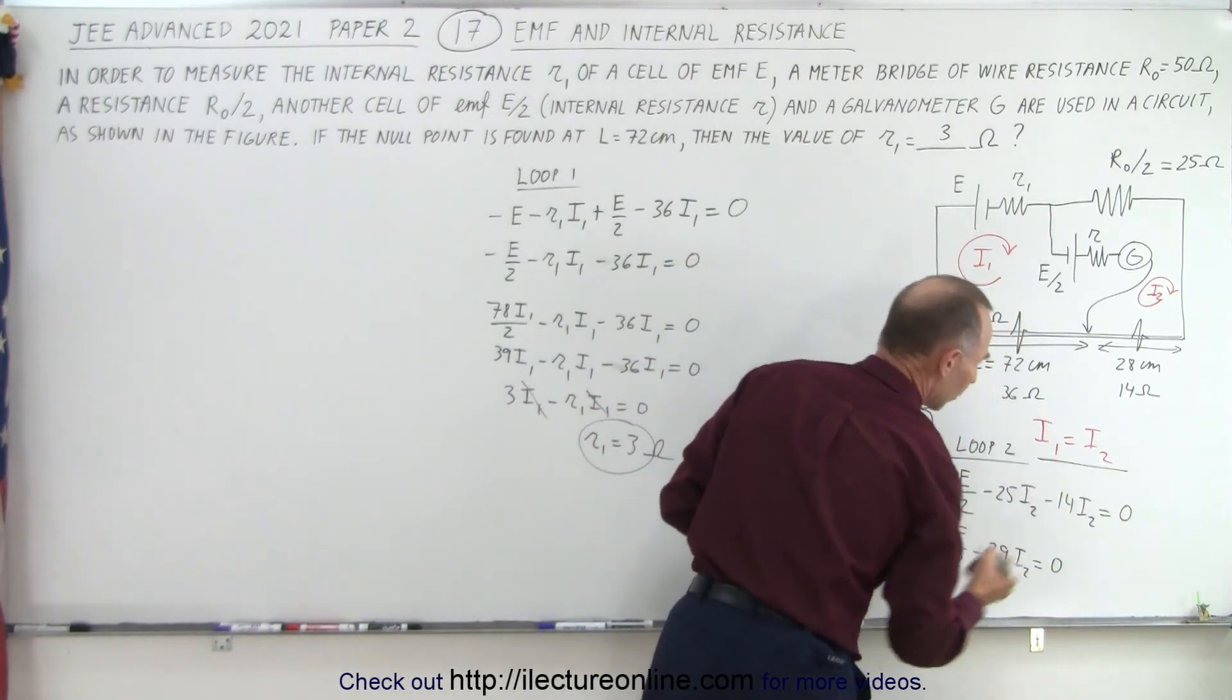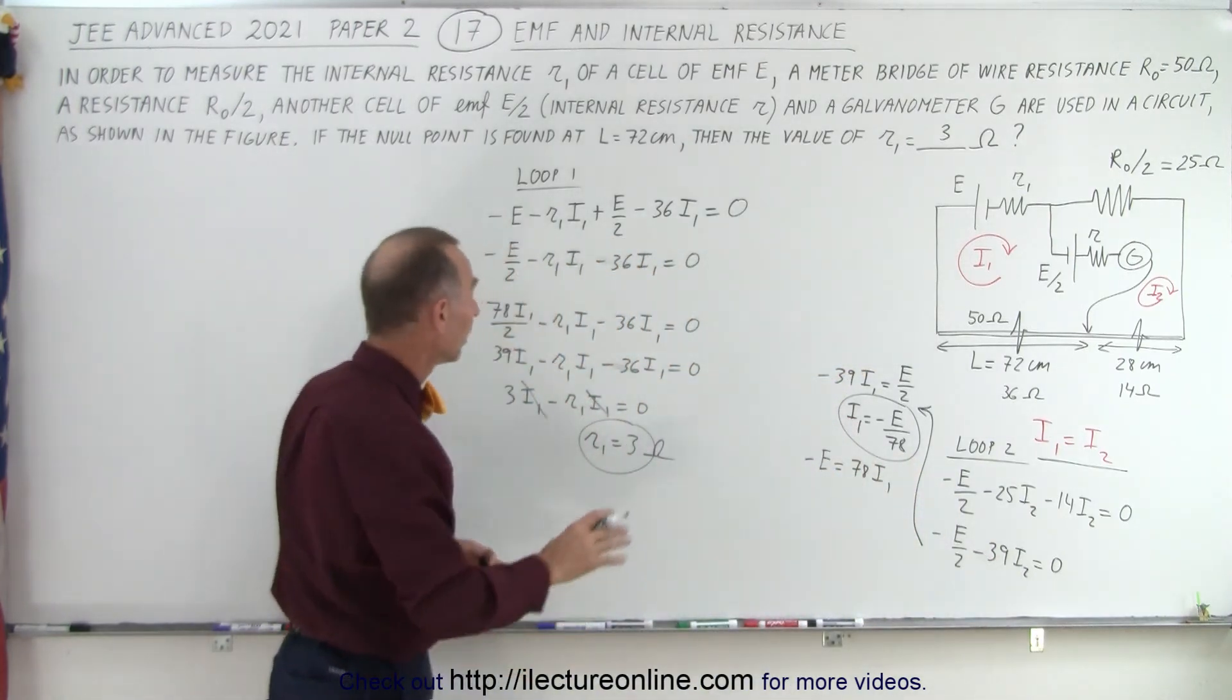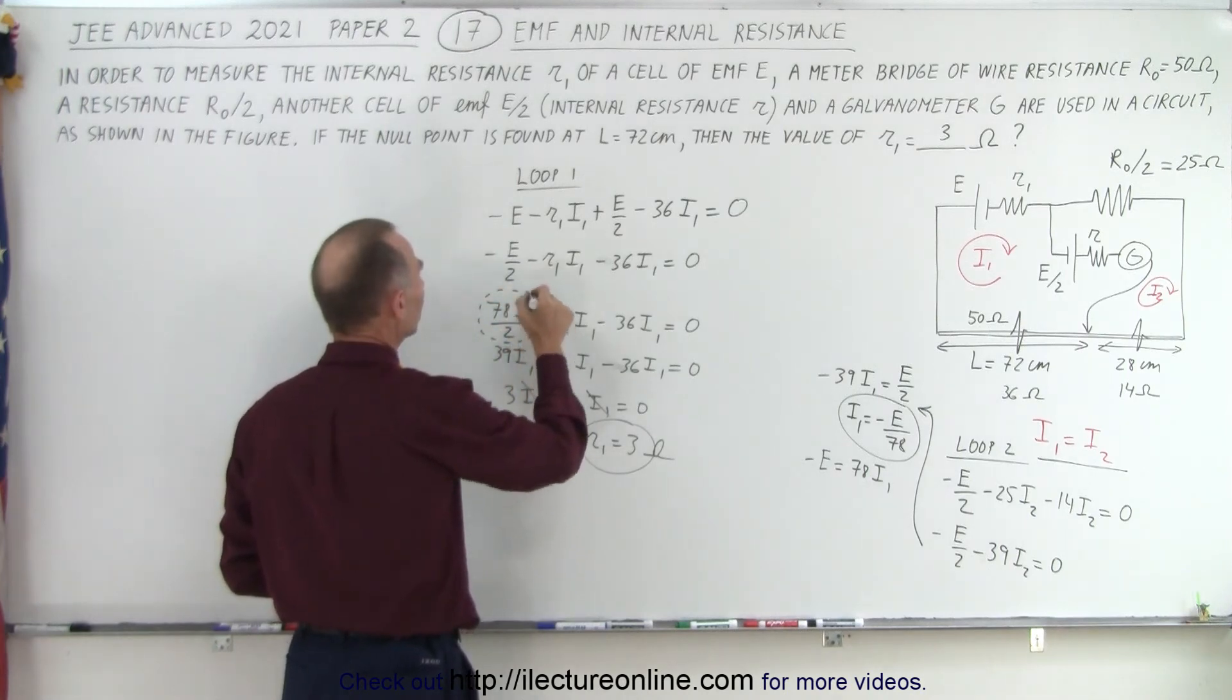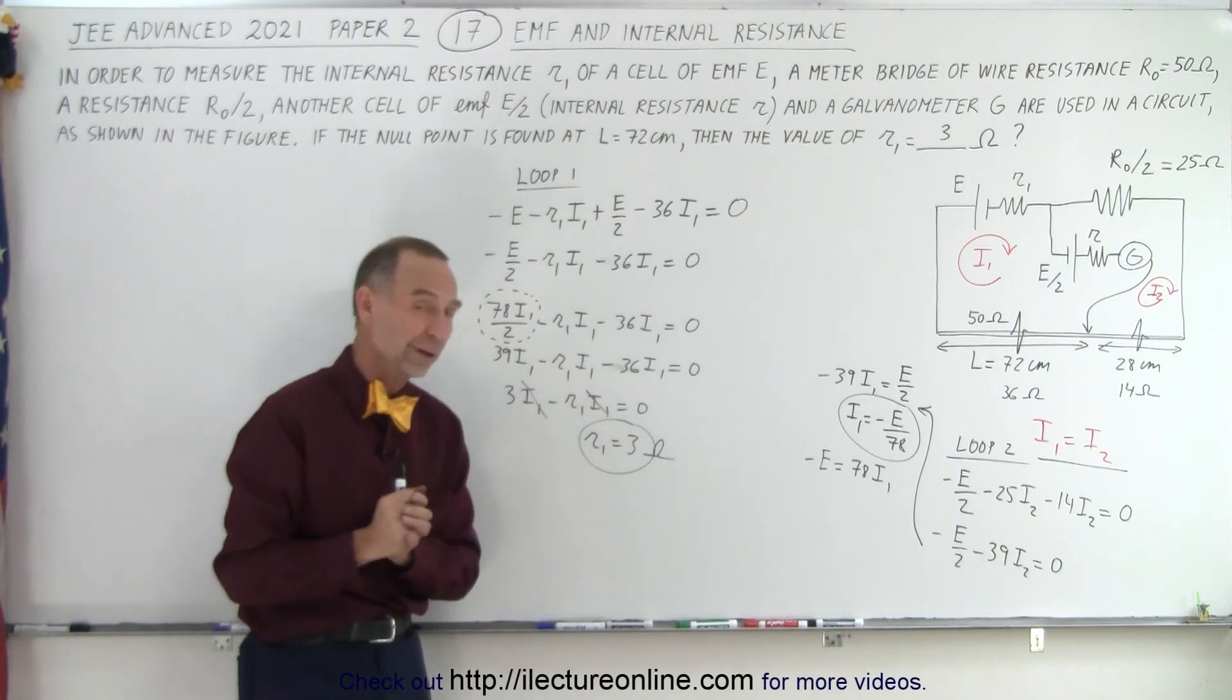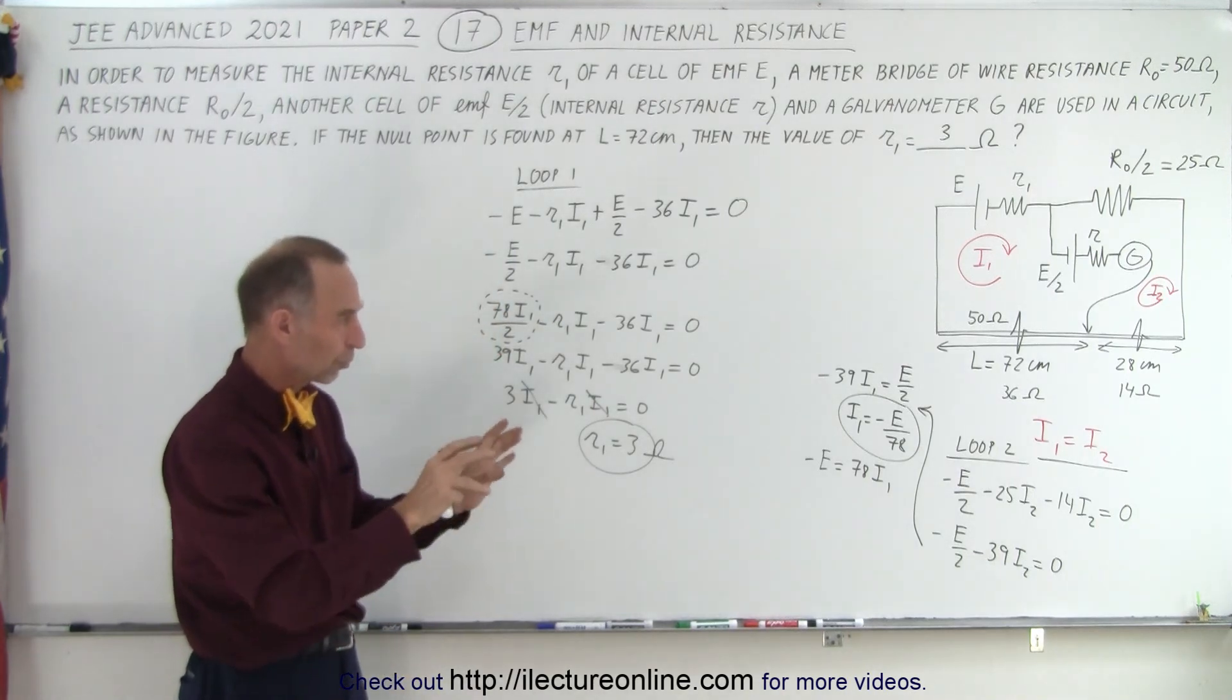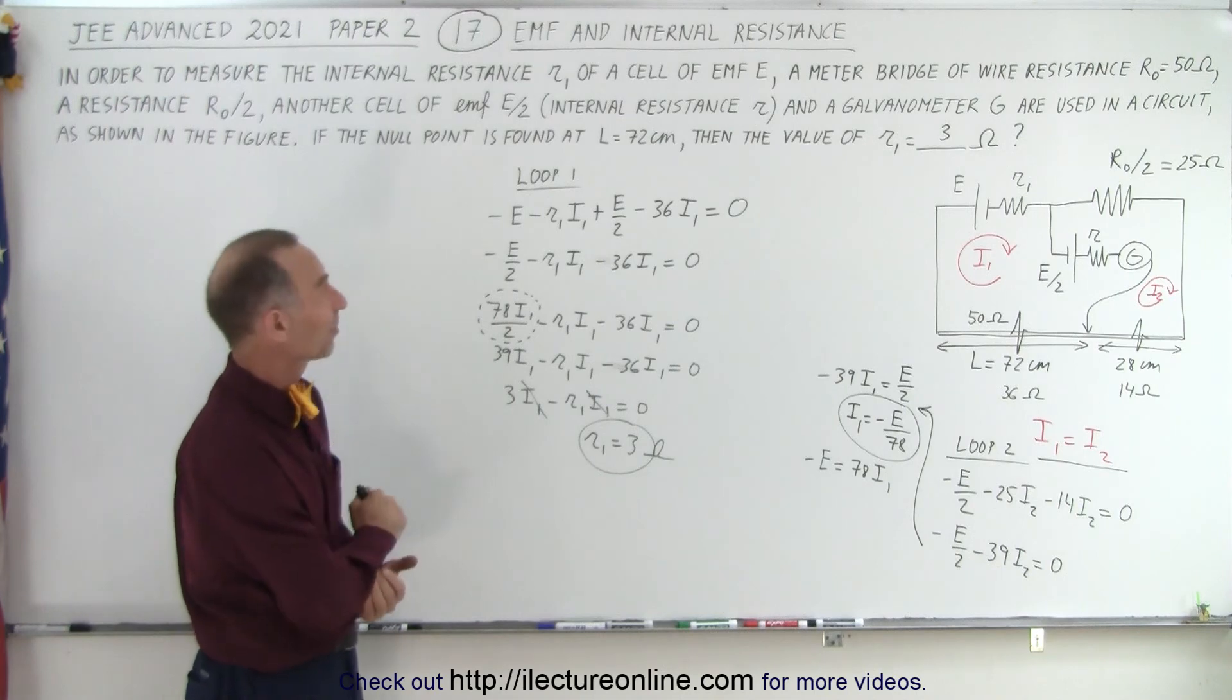And then we set up two loops, loop 1 and loop 2, we add up all the voltages going around both loops. We realize that the currents are the same, which means that this can be replaced by I1. Now we have a relationship between E and I1. We then use the substitution right here to get rid of the E on the first loop equation. We only have I1s in there, and then we realize that I1 cancels out and 3 equals R1. So with a little bit of working on two Kirchhoff's loop equations like that, solving simultaneously, you can solve for the internal resistance. And that is how it's done.